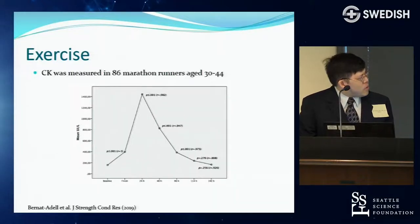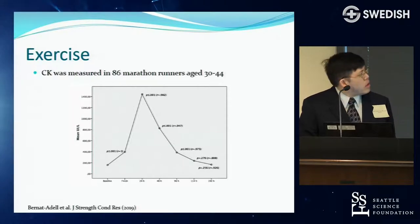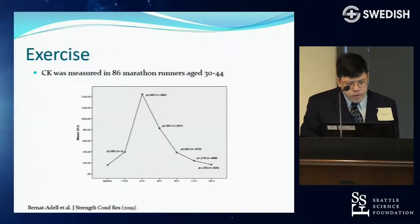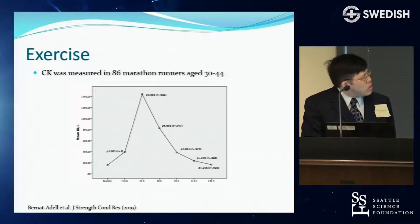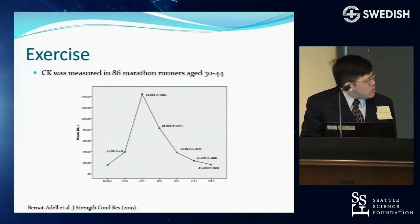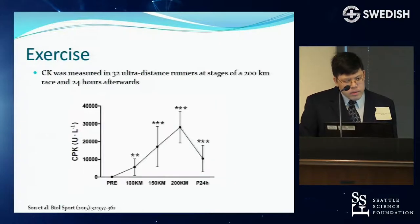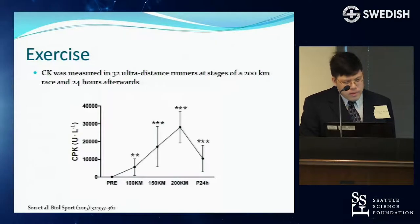In marathon runners, CK peaked around 1,400 about a day after the race and gradually decreased, returning to normal by day eight. In ultra-marathon runners, CK peaked around 30,000 but also decreased with time.